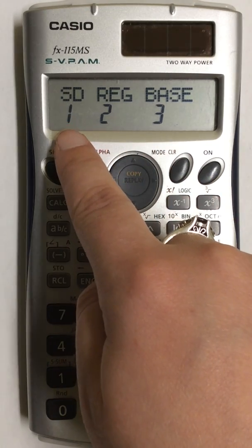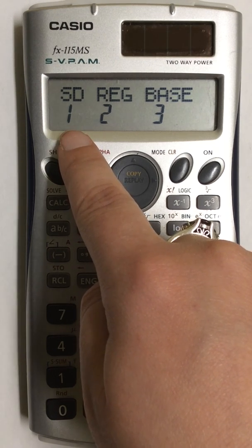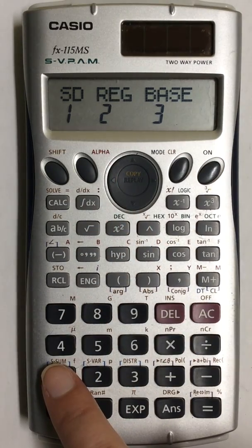SD will come up on the screen and that is the mode that I need to put my calculator in. So I'm going to press 1 on the keypad.